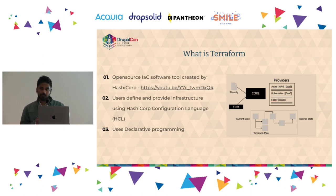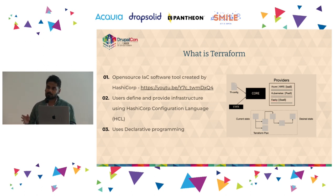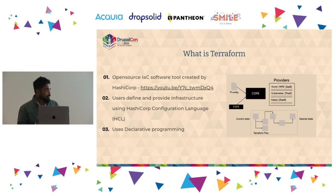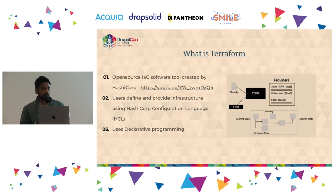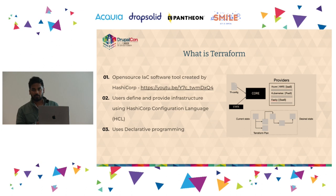If you make any changes to the infrastructure, it's with that state file that Terraform tells you exactly what modification you're going to make. Coming to providers — a provider is where Terraform knows which system it needs to connect to. Terraform can talk to any system backed by an API. There are providers like Azure, AWS, Kubernetes — over 3,000 providers supported currently.